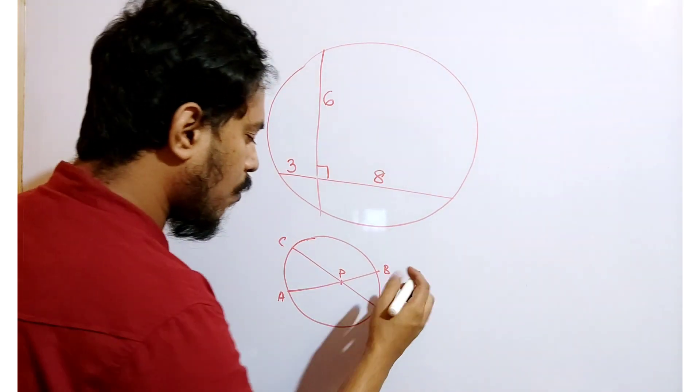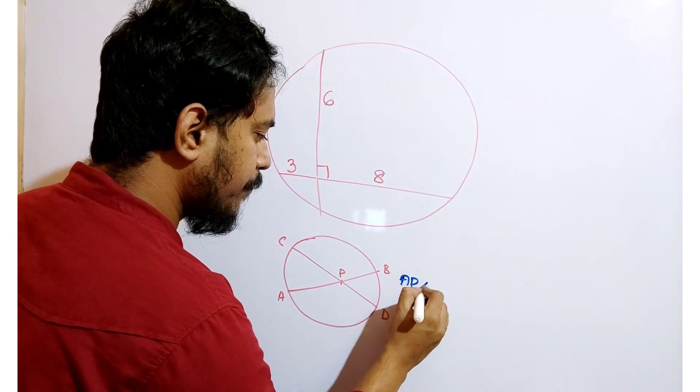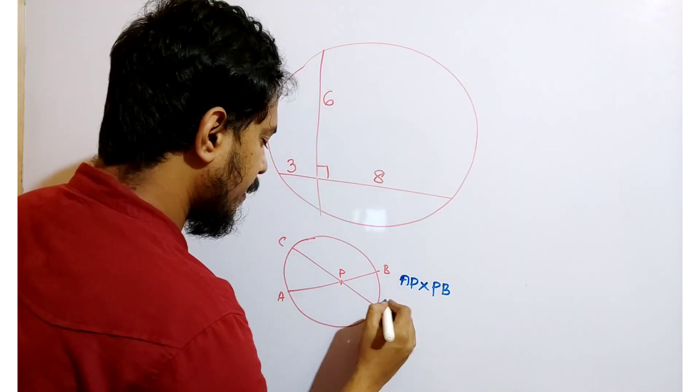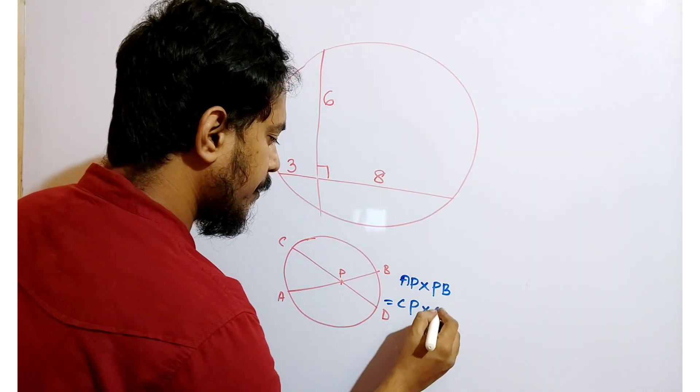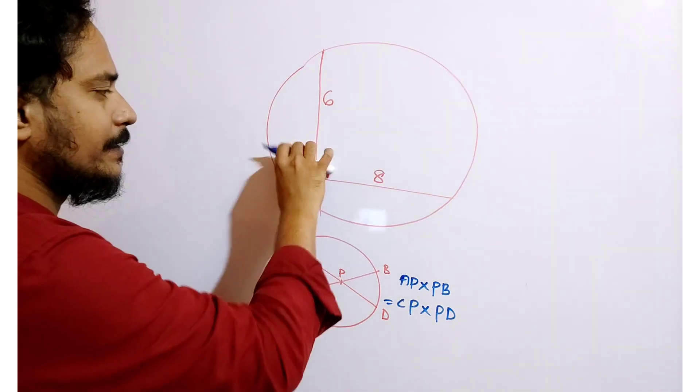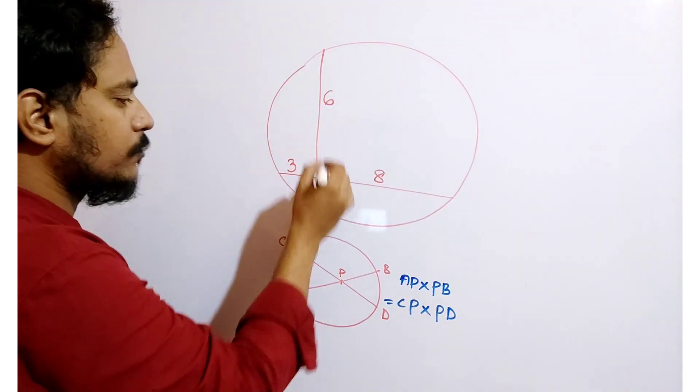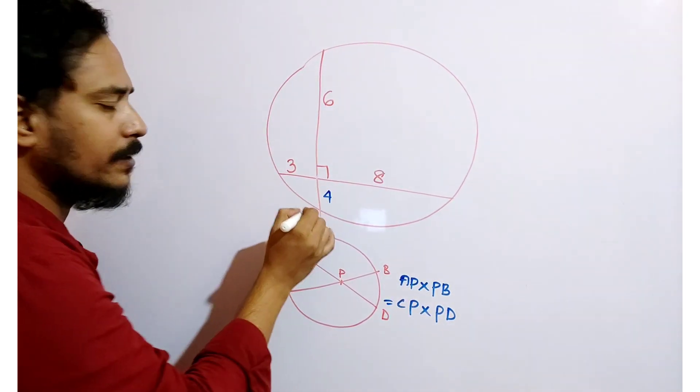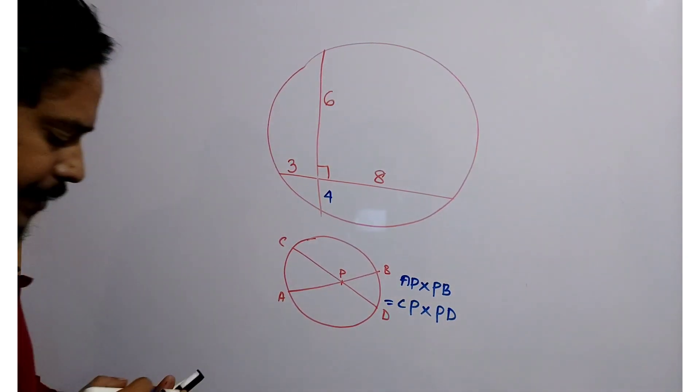Then we all know that AP into PB equals CP into PD. So 8 times 3 is 24, so 6 multiplied by the unknown length equals 24. So this length will be 4 unit. Now,